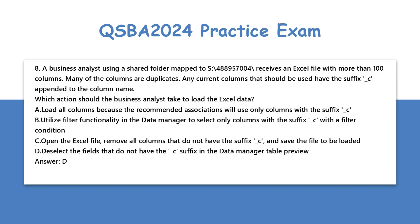A. Load all columns because the recommended associations will use only columns with the suffix underscore C. B. Utilize filter functionality in the data manager to select only columns with the suffix underscore C with the filter condition. C. Open the Excel file, remove all columns that do not have the suffix underscore C, and save the file to be loaded. D. Deselect the fields that do not have the underscore C suffix in the data manager table preview.